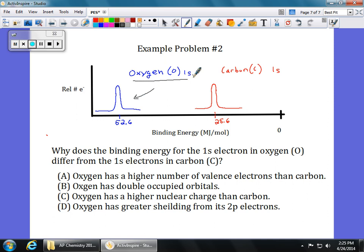Well, this is a 1s electron. So shielding is not going to come into play here. There's not going to be any shielding of the 1s electron. So the thing that made the difference that we talked about was the higher nuclear charge. Hopefully, if you see this one, you're going to pick choice C.